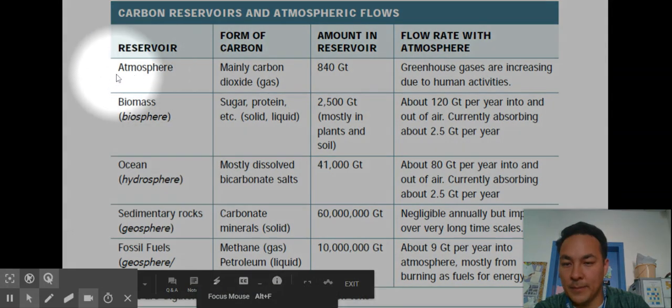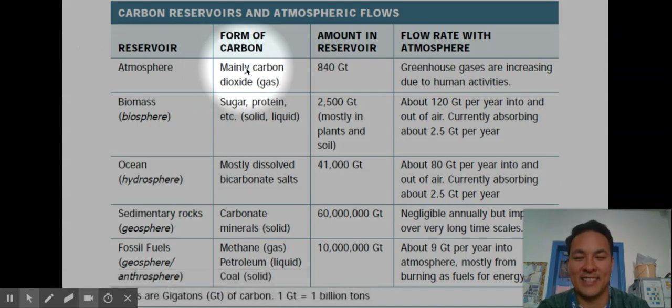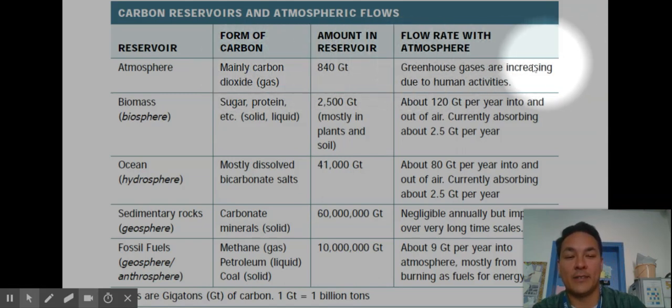In the atmosphere, carbon is held as carbon dioxide gas. There's a lot of it up there, and it's a greenhouse gas. A greenhouse gas is good in that it keeps the Earth warm enough for us. But if there's too much, then that can be negative, and the Earth can be too hot.